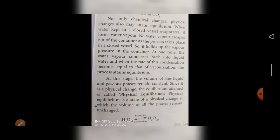Next, physical equilibrium. Not only chemical change — physical change also may attain equilibrium. The change of state — solid, liquid, and gas — may also attain equilibrium. When water kept in a closed vessel evaporates, it forms water vapor. The vapor cannot escape out of the container, and it builds up vapor pressure inside the container. At one point, the water vapor condenses back into liquid water, and when the rate of condensation becomes equal to the rate of vaporization, the process attains equilibrium.